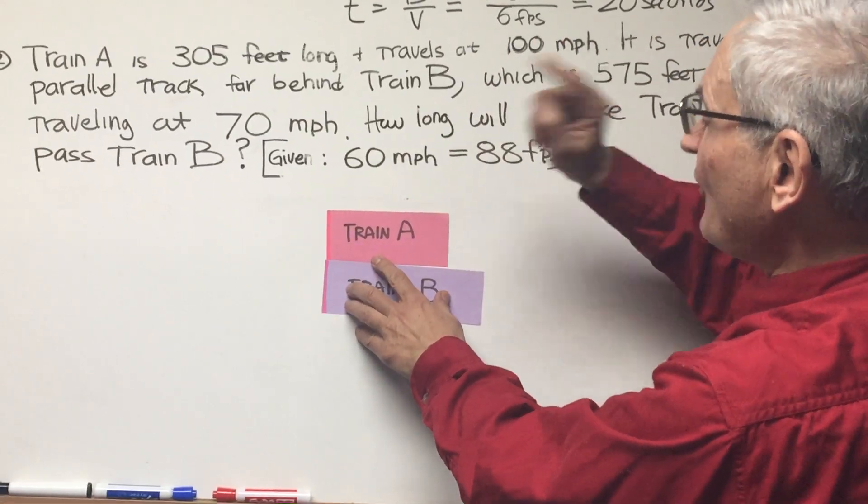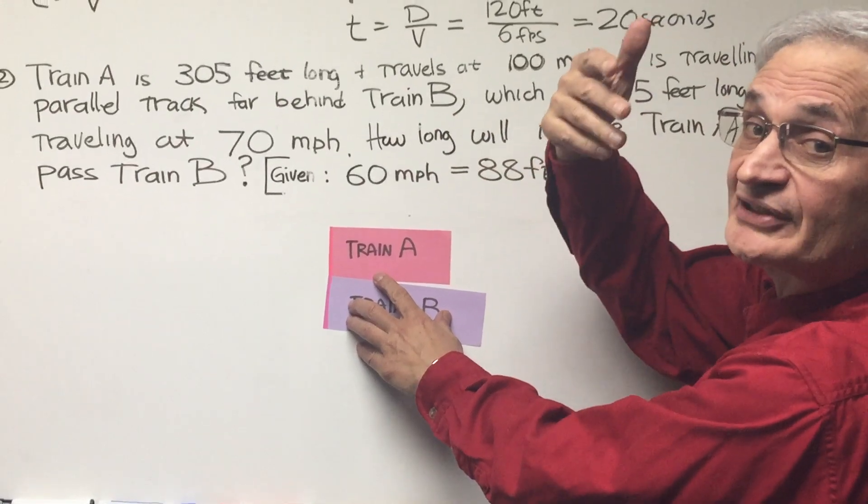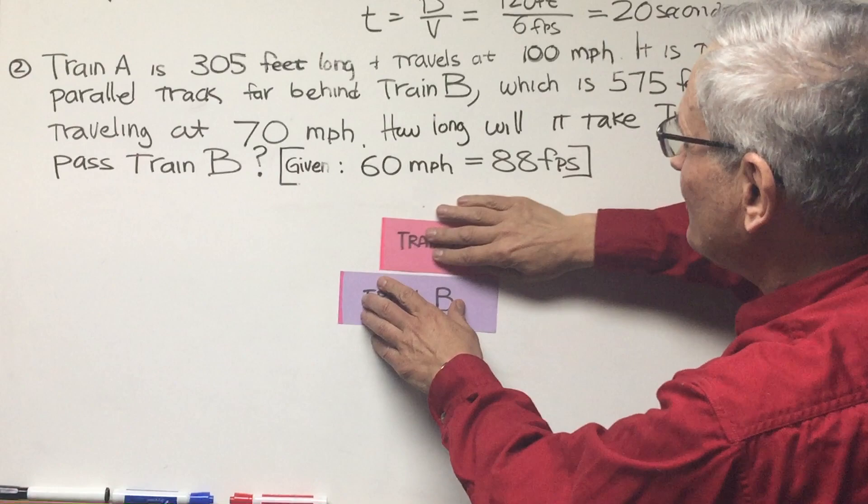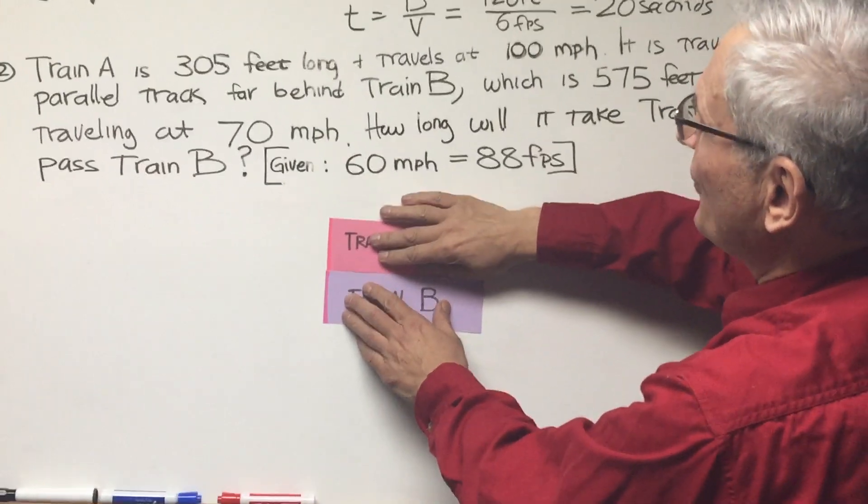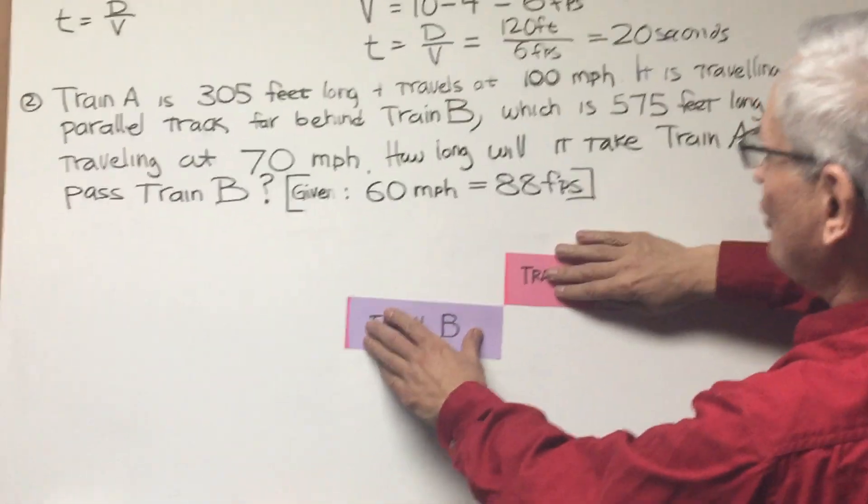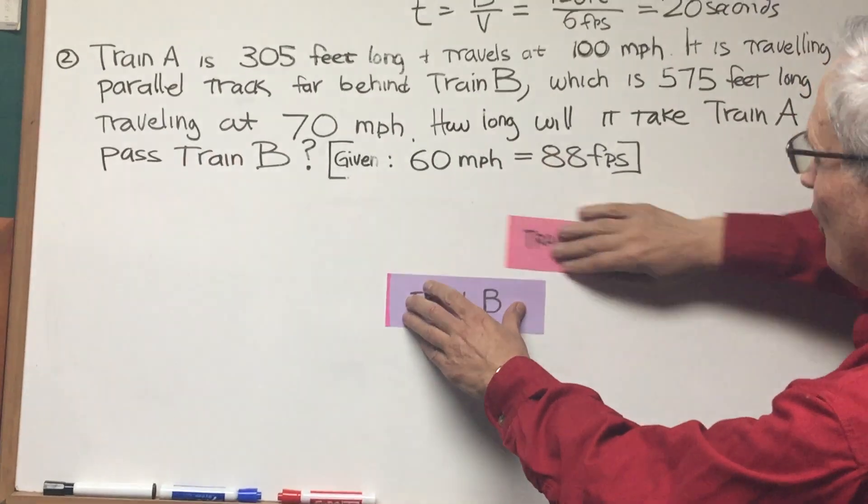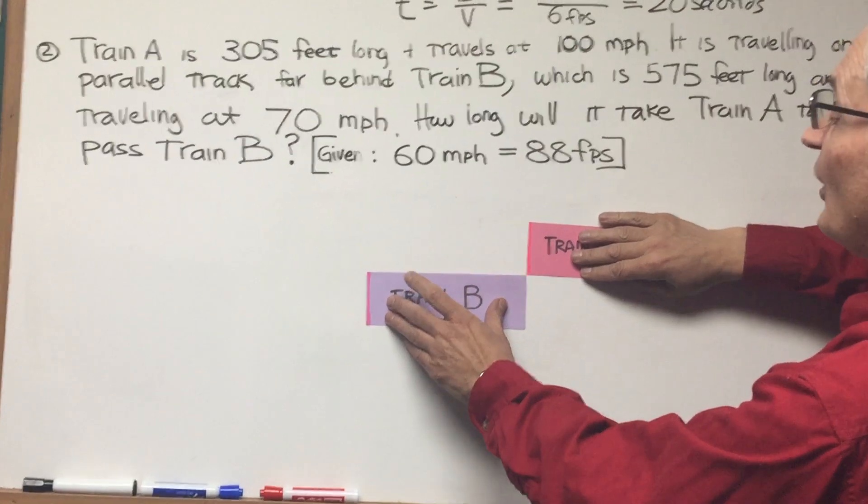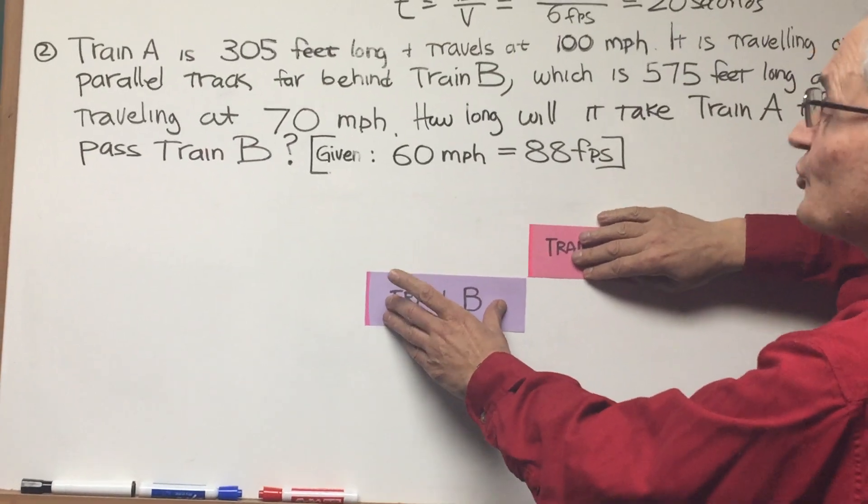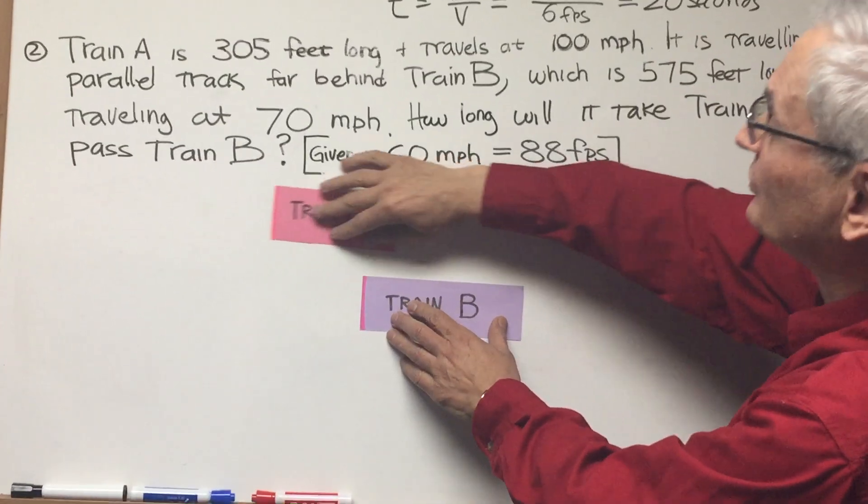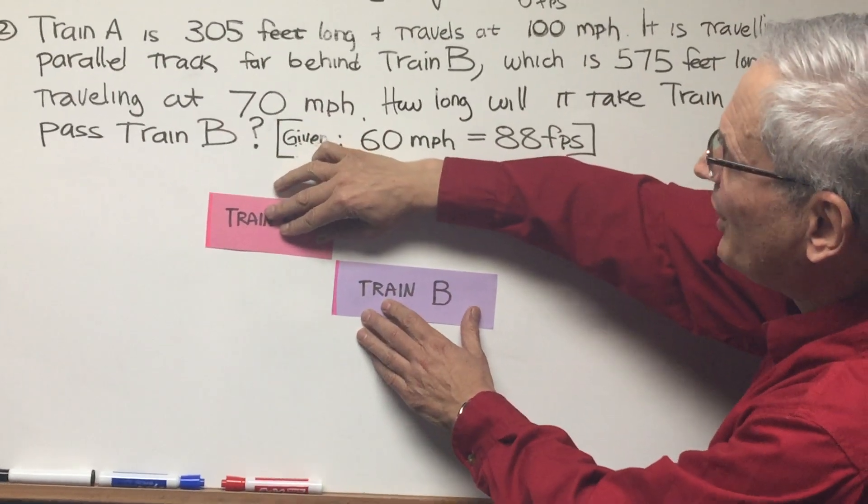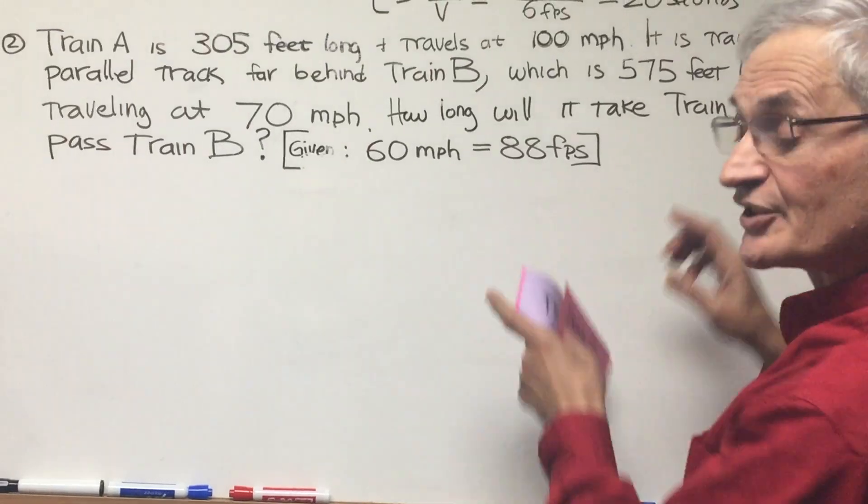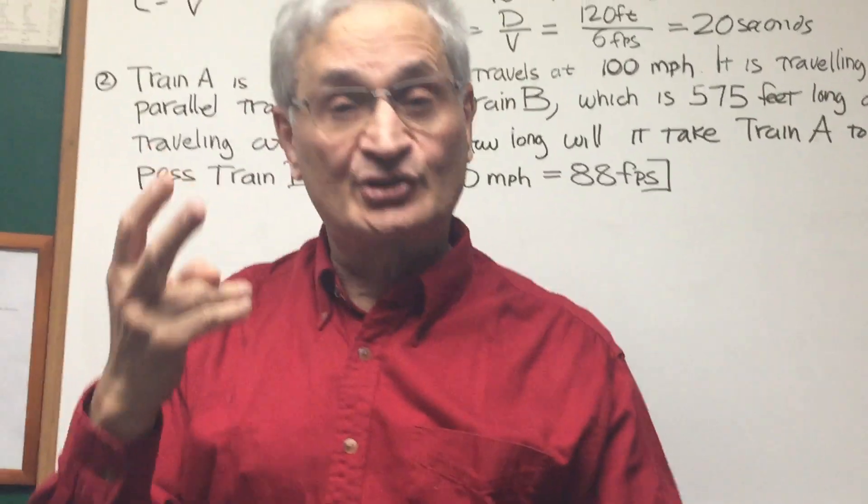How much distance does train A have to travel additionally such that it passes train B? That is, when the back of train A is flush with the front of train B, it has to travel a distance equaling the length of train B. So in order for train A to pass train B, it has to travel a distance equal to the sum of the lengths of the two trains.